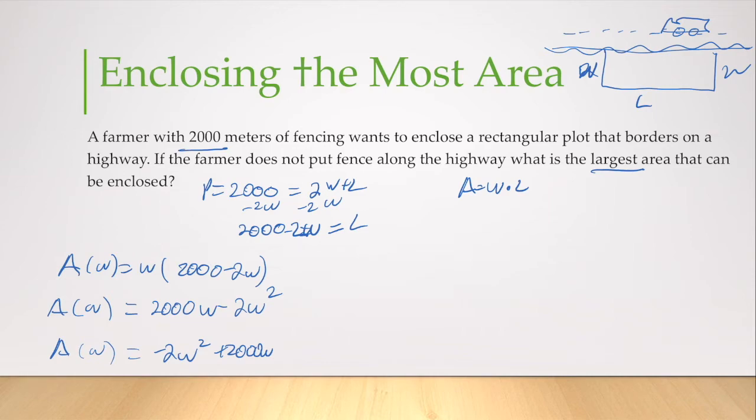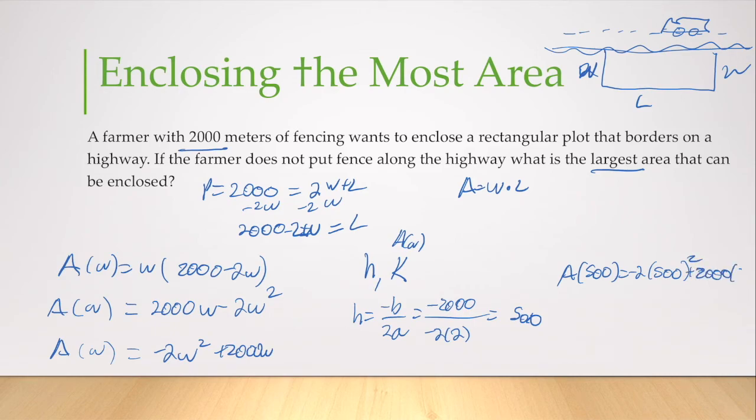I can now note that if I find H, that's going to be the value for W that maximizes my area. But I need to solve for K, which is A of W, in order to determine the area. So H equals negative B over 2A, which is negative 2,000 over negative 2 times 2. That's going to give me a positive 500. Then I take A of 500. That's negative 2 times 500 squared plus 2,000 times 500. That gives me negative 500,000 plus 1,000,000. So I get an area of 500,000 square feet. Don't forget your units.